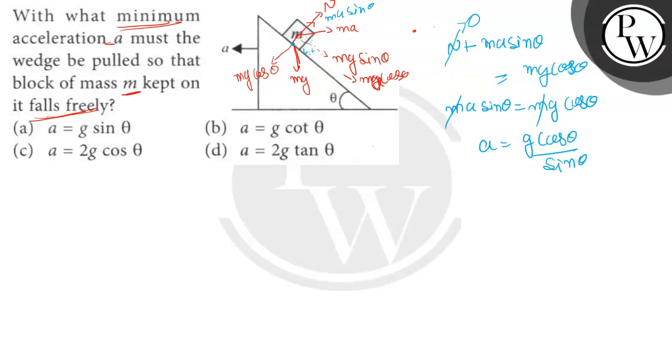This equals g cot theta. So in this condition, a equals g cot theta. Option B is correct. Thank you, students.